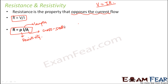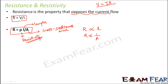From the expression R = ρL/A, resistance is directly proportional to the length of the conductor and inversely proportional to its cross-sectional area. Resistivity depends upon the nature of the material of the conductor — it has nothing to do with length or area. Resistivity is also sometimes called specific resistance.